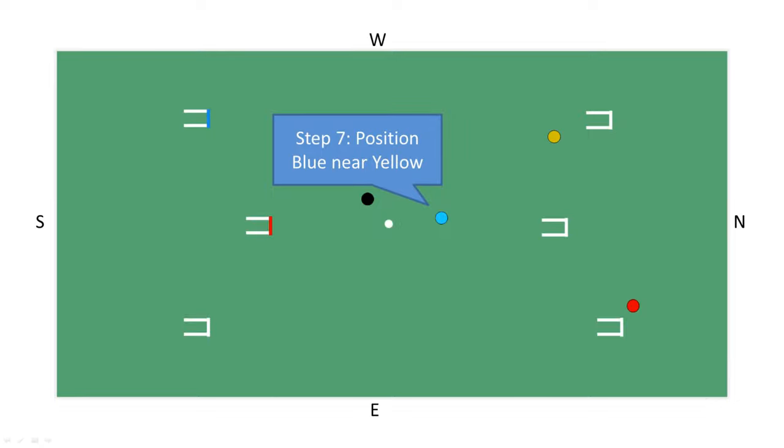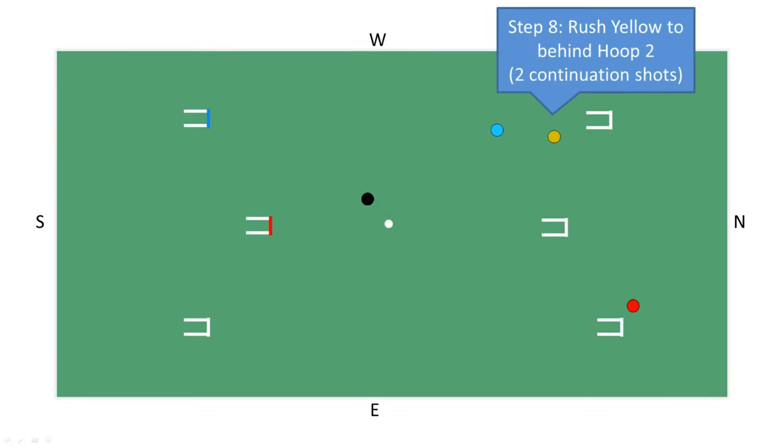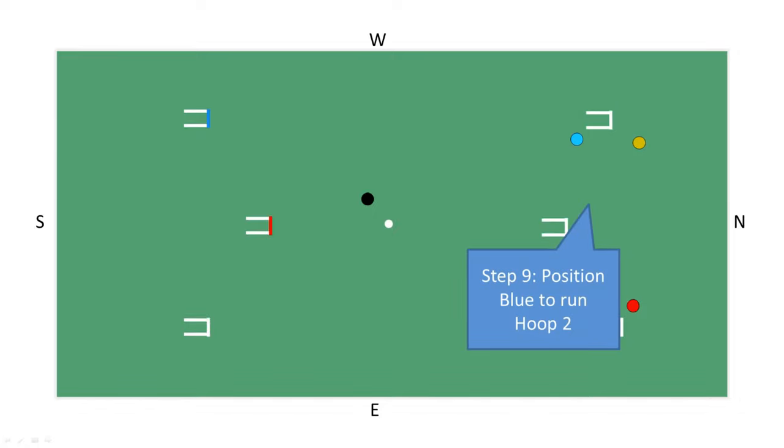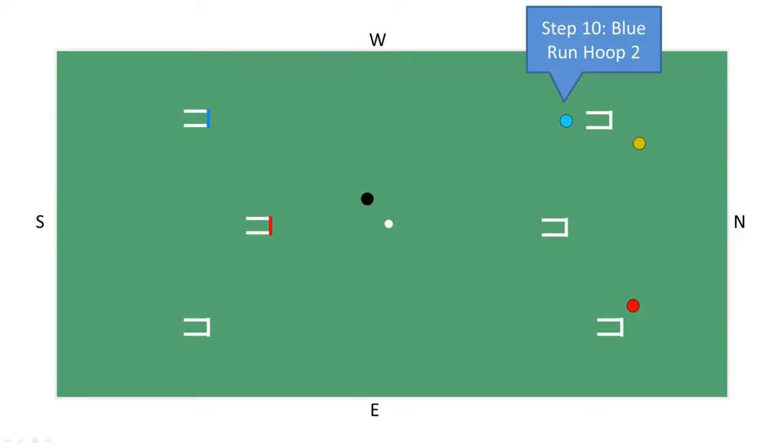As red was a live ball, blue again picks up two more continuation strokes. Blue now positions near the yellow ball. It then rushes yellow to an escape position behind hoop 2. Blue then takes up a position ready to run hoop 2 and then runs hoop 2, making sure to go slightly past the yellow ball.